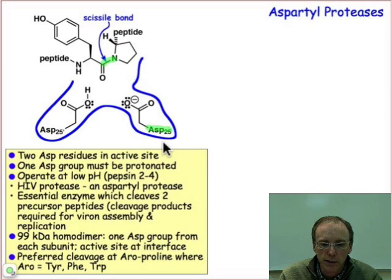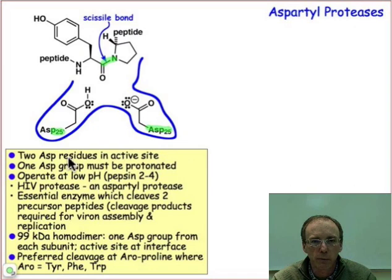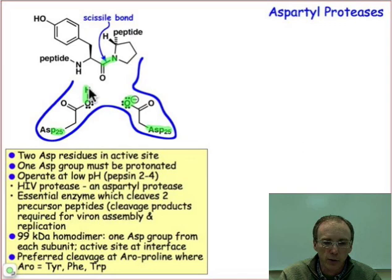Here's the aspartyl protease active site with the aspartyl residue at position 25 from one chain, and 25 prime that comes from the other chain. One of these aspartate groups is protonated, and the other one is unprotonated. So we've got the general base on the right and the general acid on the left.